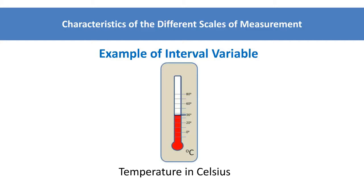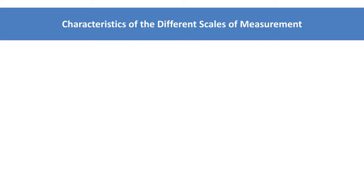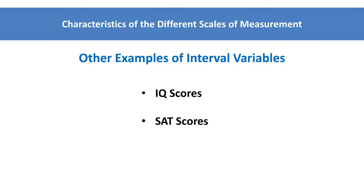The same characteristics also hold true for temperatures measured in Fahrenheit. Some other examples of interval variables include IQ scores and SAT scores. For each of these interval variables, the distance between pairs of consecutive numbers is assumed to be equal, but they do not have a meaningful zero point.